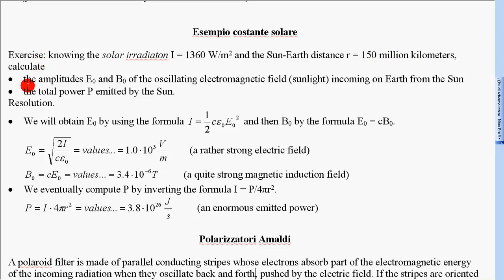calculate the amplitudes E₀ and B₀ of the oscillating electromagnetic field (sunlight) incoming on Earth from the Sun, and the total power P emitted by the Sun.